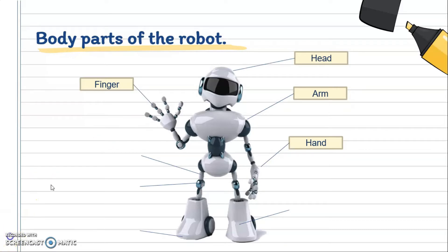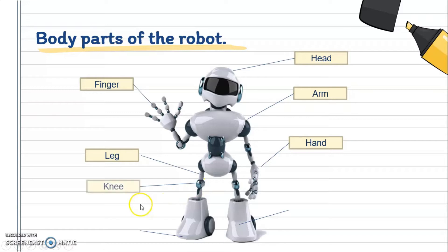Now we are done with the upper part of the body. Now we will go down to the lower part of the body. We have leg. Repeat after me: Leg. The whole part here we call it leg. Next we move on to knee. Repeat after me: Knee. Very good! When we pronounce 'knee', we cover the K and we don't pronounce it, so it's 'knee'.